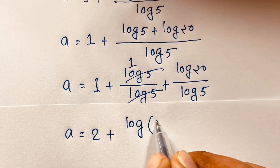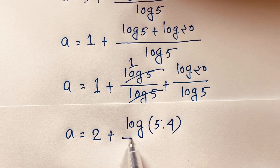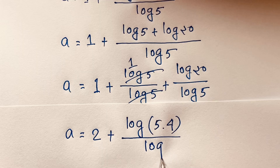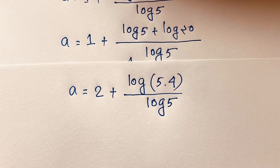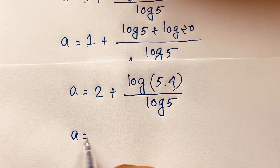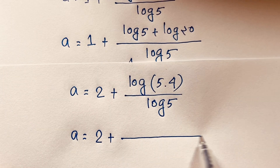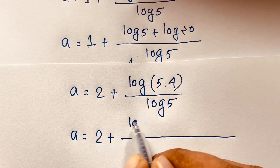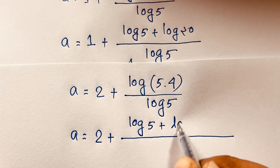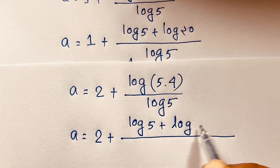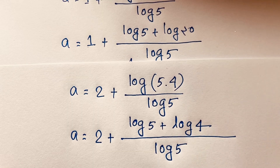Now log 20 equals log(5 × 4), since 5 times 4 is 20. I solve this step by step. So a is equal to 2 plus log(5 × 4) over log 5. I apply the product rule again: log(5 × 4) becomes log 5 plus log 4.